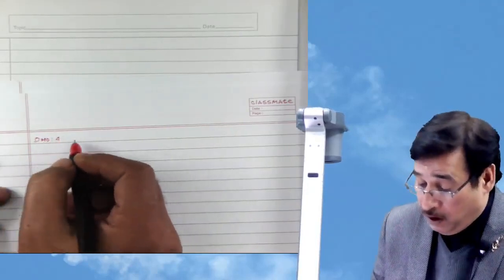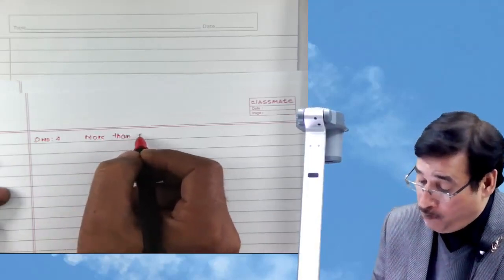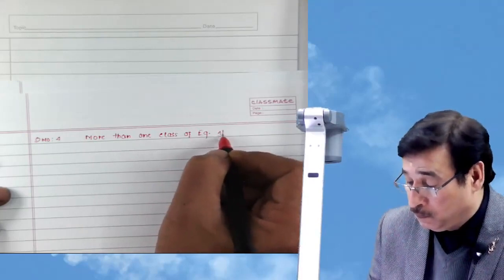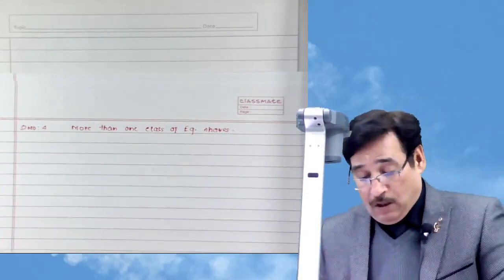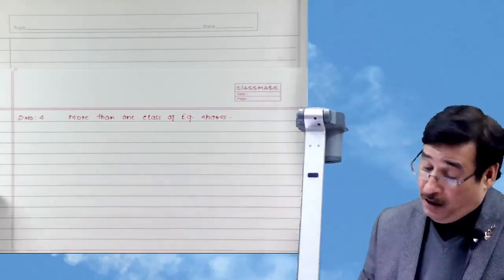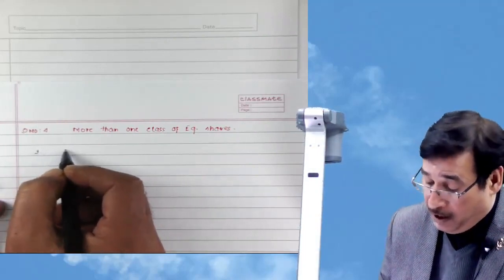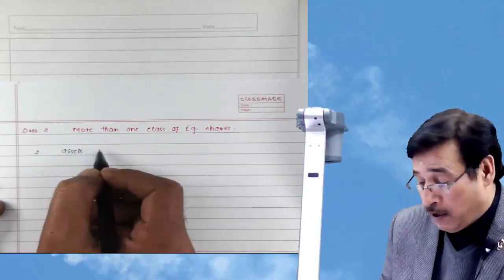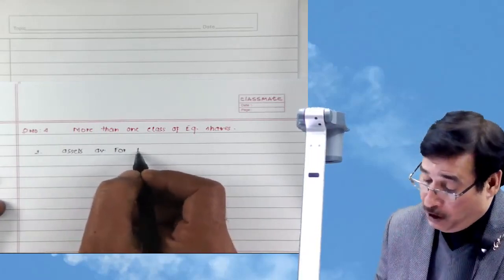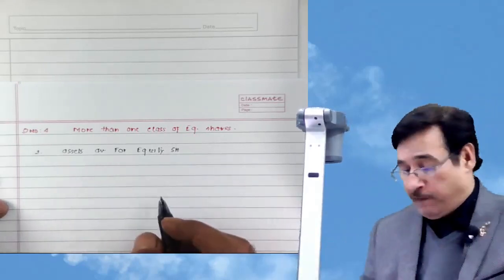In question number four, more than one class of equity share is present. First of all, we are going to find assets available for equity shareholders — this should be your first target. When there is more than one class of share, there are two methodologies to find the value per share. In this question there is no preference share capital, so that is a separate matter.